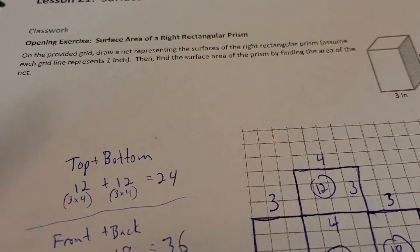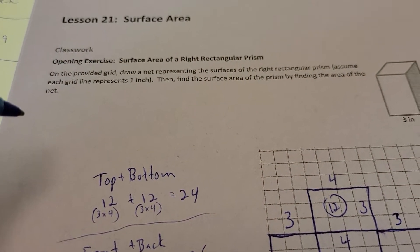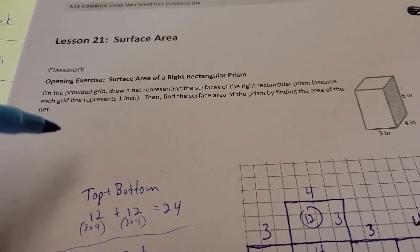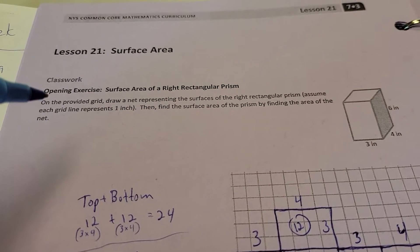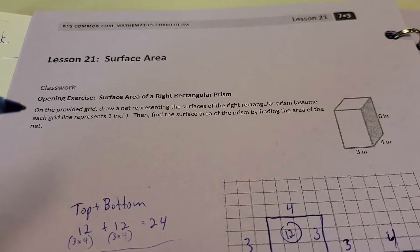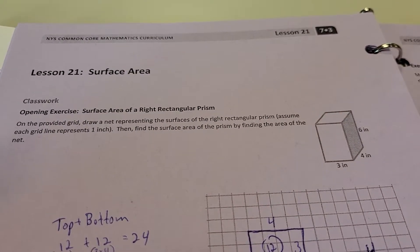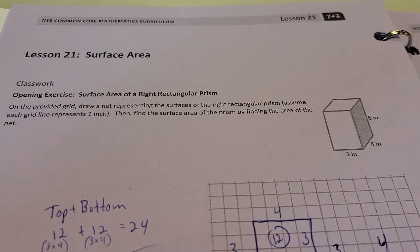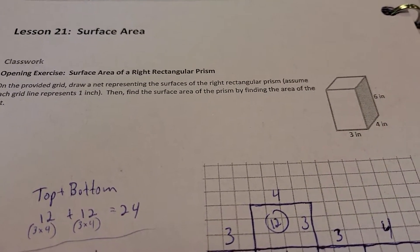For today, we are going to work on surface area. We've got a couple of lessons we'll do on surface area, and here's lesson 21. With surface area, you're finding the area of all the faces on the outside of the three-dimensional object. Usually this consists of squares, rectangles, triangles, and so on.